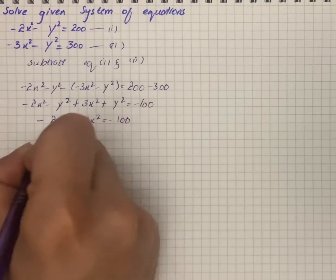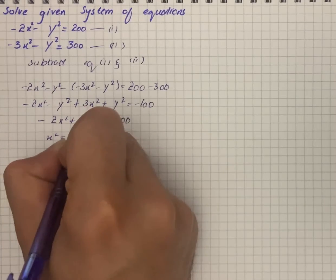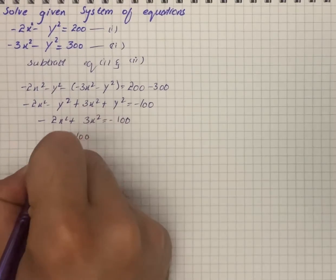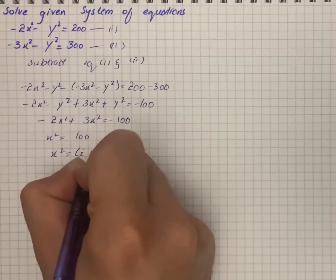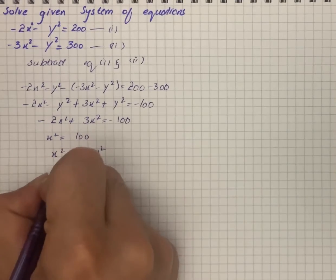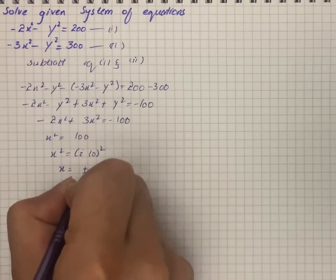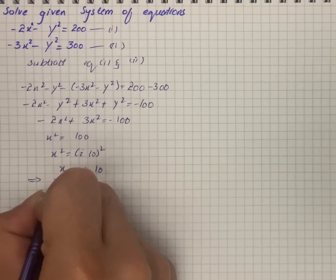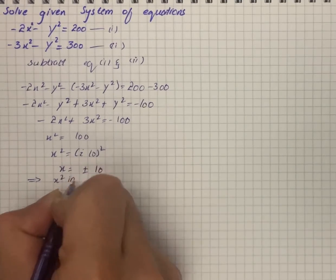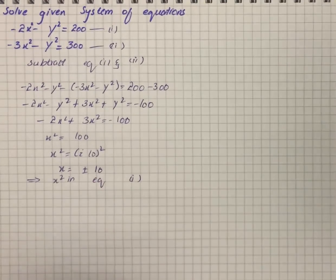So we have x² equals minus 100, which equals (10i)² — therefore x is equal to plus or minus 10i. Now we put the value of x² into equation 1.